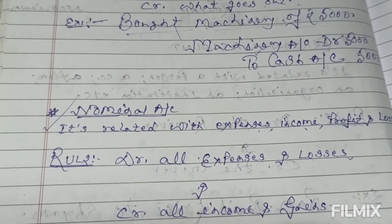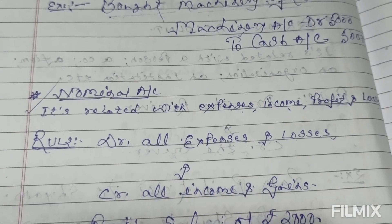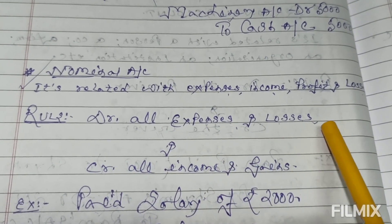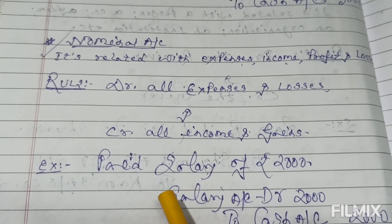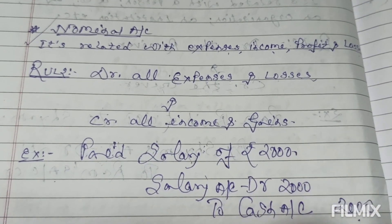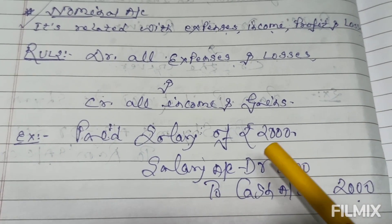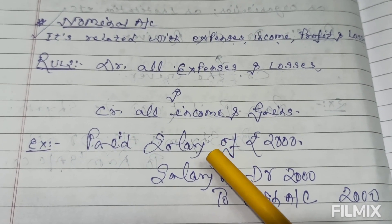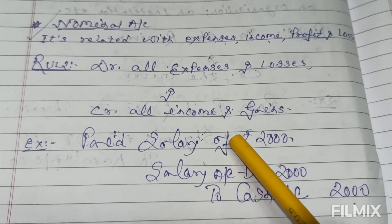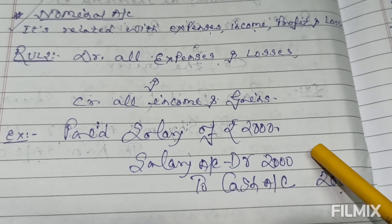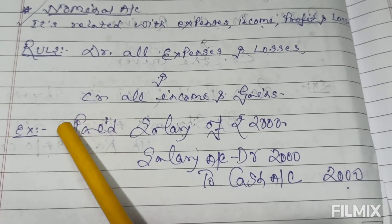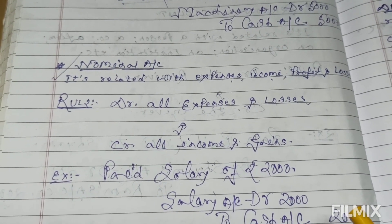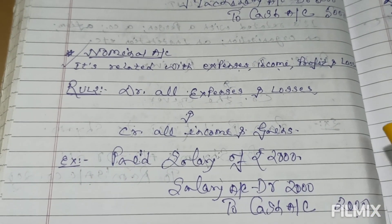Last but not the least — the nominal account. In business, innumerable expenses and incomes take place. Nominal account relates with all expenses, income, profit, and losses. On the debit side you show all expenses and losses, and on the credit side all income and gains. For example: paid salary of rupees 2000. Salary is an expense for the business and will be shown on the debit side. You are paying cash, so cash account is credited. These three golden rules are the foundation of accountancy — you must keep them in mind.